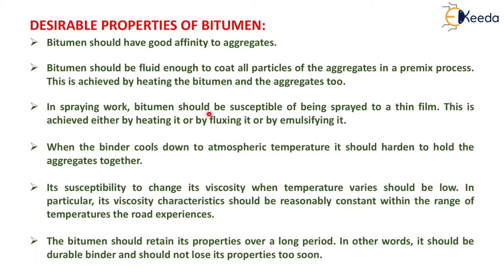In spraying work, bitumen should be capable of being sprayed to a thin film. This is achieved either by heating it, by fluxing it, or by emulsifying it. When the binder cools down to atmospheric temperature, it should harden to hold the aggregates together. Its susceptibility to change viscosity when temperature varies should be low, and its viscosity characteristics should be reasonably constant within the range of temperatures the road experiences. The bitumen should be a durable binder and should not lose its properties too soon.